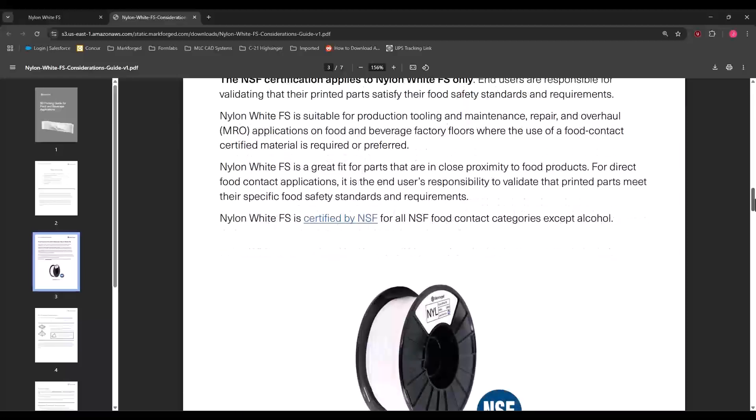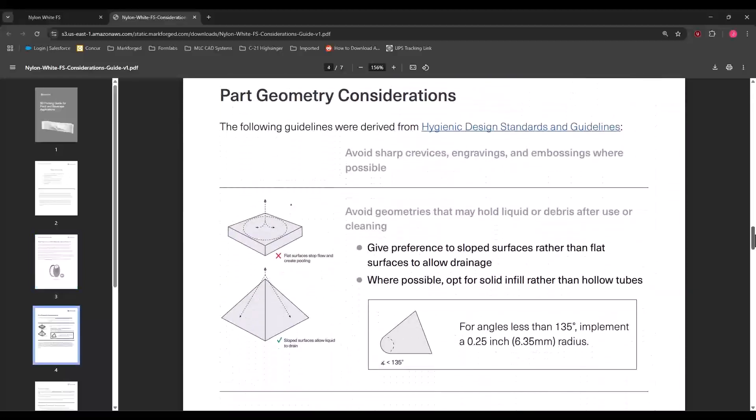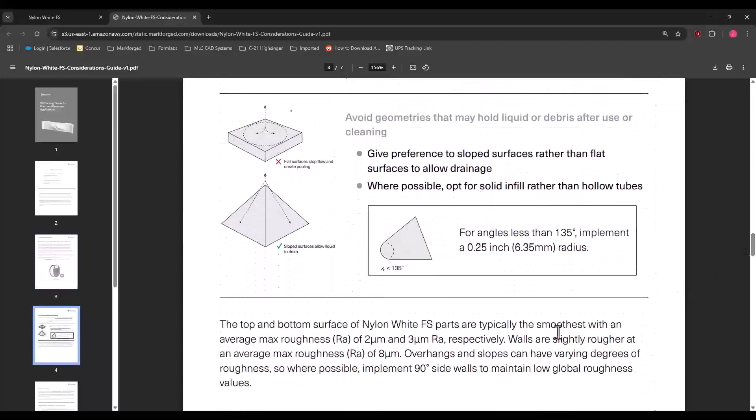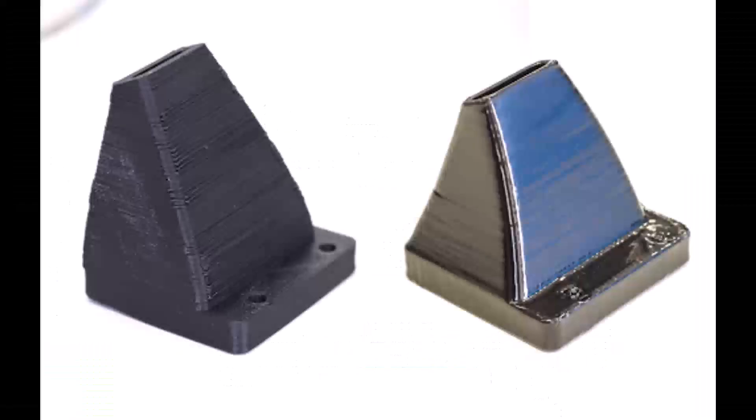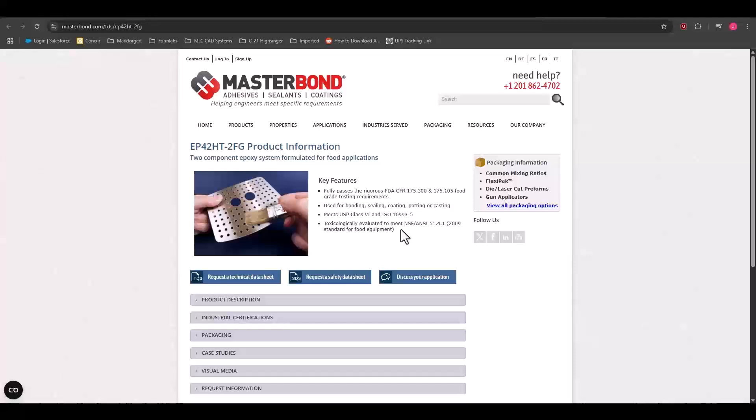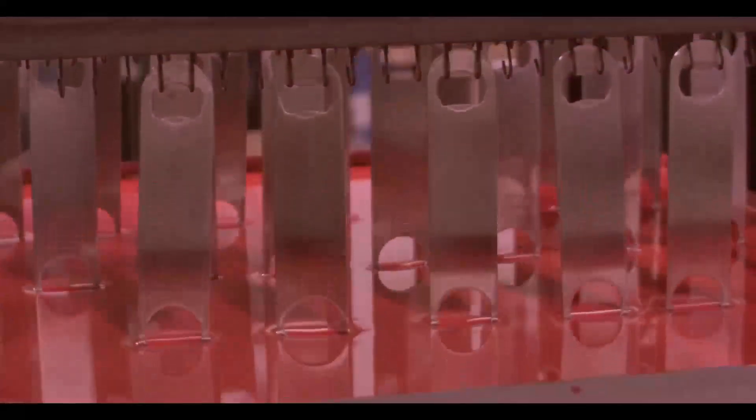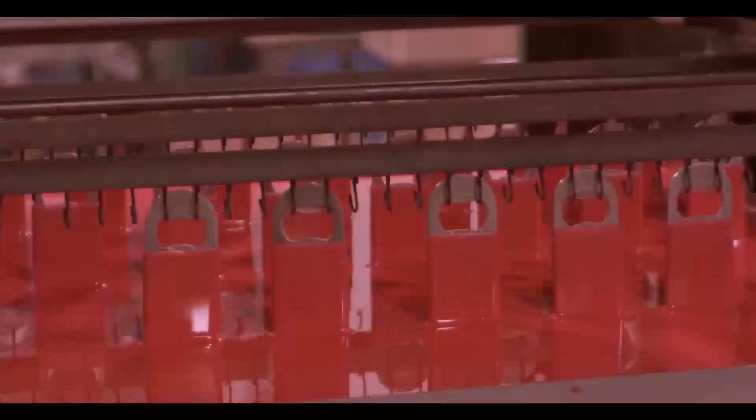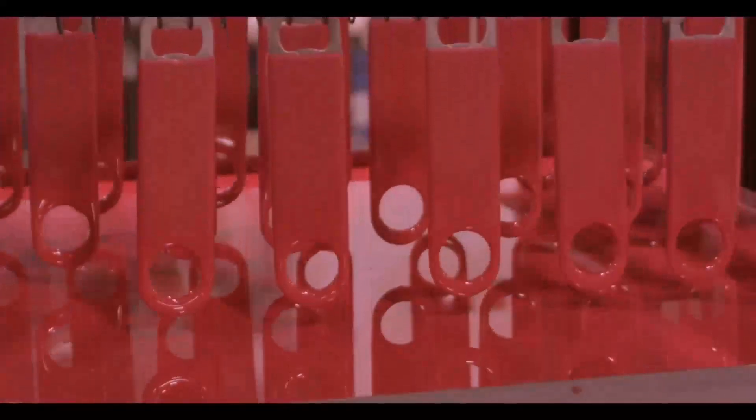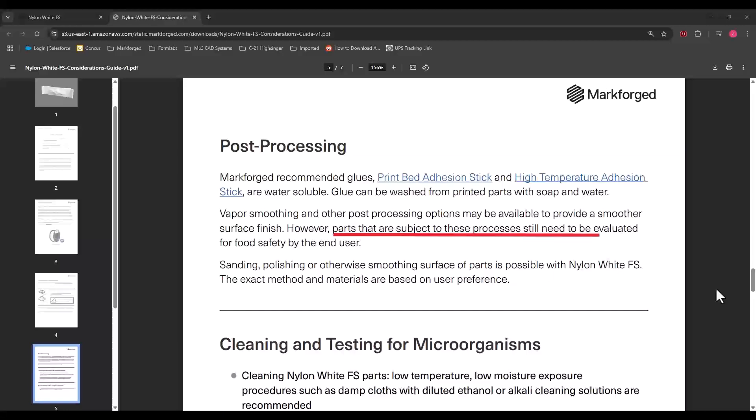This is why Markforged's guide specifies the goal of minimizing moisture buildup and microorganism growth and to manufacture parts that are easy to clean and sanitize. Their design guide assists with that by specifying things like designing with 90-degree sidewalls, for instance, to eliminate stepping. Smoothing FDM surfaces via vapor smoothing or sealing with a food-safe epoxy helps to increase food safety of the parts themselves beyond just the material, but food safety testing still needs to be performed by the end-user.